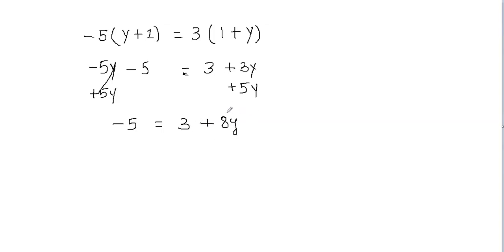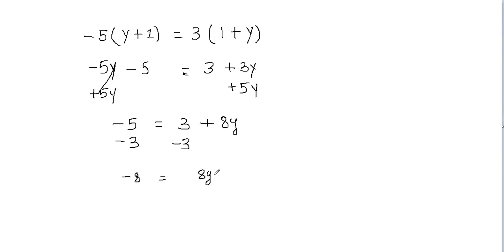Now all we need to do is get y by itself. To get y by itself, first we're going to undo addition. I have 3 here, so I'm going to eliminate 3 by subtracting 3 from both sides. So negative 5 take away 3 gives me negative 8, and on the right side 3 take away 3 is 0, leaving 0 plus 8y which gives me 8y.